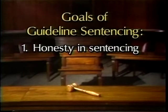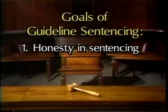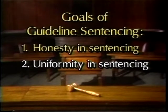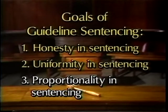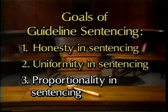Congress created this guideline sentencing system to promote honesty in sentencing by doing away with parole and making certain the offender serves the actual sentence imposed; uniformity in sentencing by setting sentencing ranges that help ensure similar offenders who commit similar crimes are given similar sentences; and proportionality in sentencing — for example, ensuring that an offense which is twice as serious as another will result in a penalty twice as serious. Complete and accurate fact-finding is an important part of achieving these goals, because guideline sentencing involves the application of the guidelines to the facts of the offense.